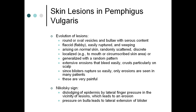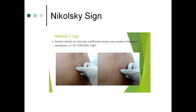Nikolsky sign is the dislodging of epidermis by lateral finger pressure in the vicinity of lesions, leading to erosion. Pressure on a bulla leads to lateral extension of the blister. Nikolsky sign indicates disease activity; when under treatment it won't be exhibited. To demonstrate it, lateral traction on clinically unaffected mucosa produces stripping of epithelium — as shown by erosion after thumb pressure.